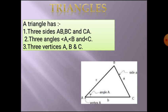Next, one more example — triangle ABC. Points A, B, C are the vertices. Your triangle has three sides: AB, BC, and CA; three angles: angle A, angle B, angle C; and three vertices: A, B, C.